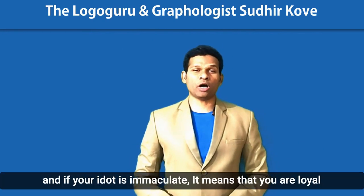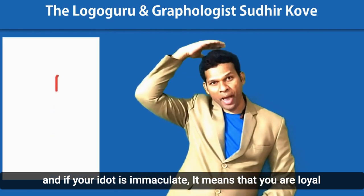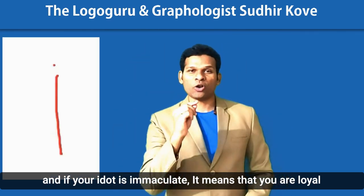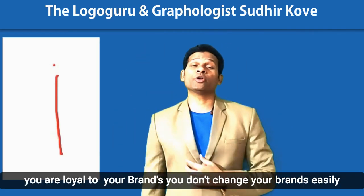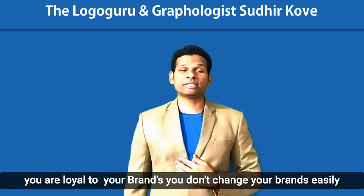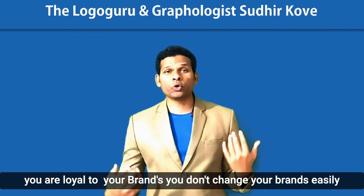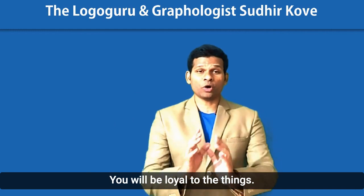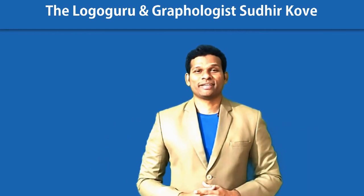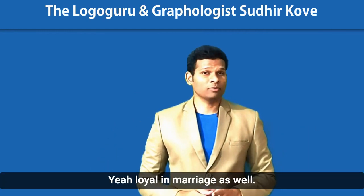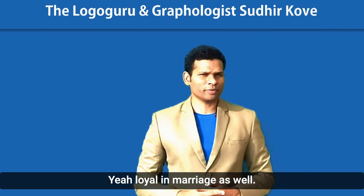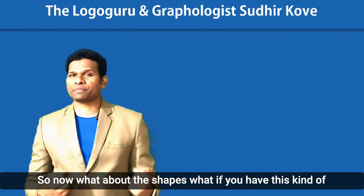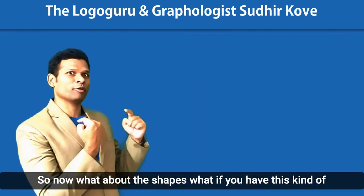If your i-dot is immaculate — placed precisely — it means that you are loyal. You are loyal to your brands, you don't change your brands easily, you don't change things very easily. You will be loyal to things, yes, even in marriage as well.